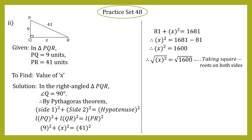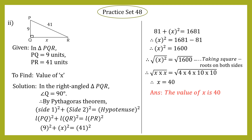Taking square roots on both sides: x·x = 1600 = 4 × 4 × 10 × 10. The numbers appearing twice inside the square root are written once, so x = 4 × 10 = 40. Therefore, the value of x is 40.